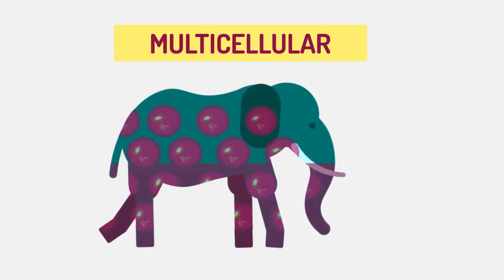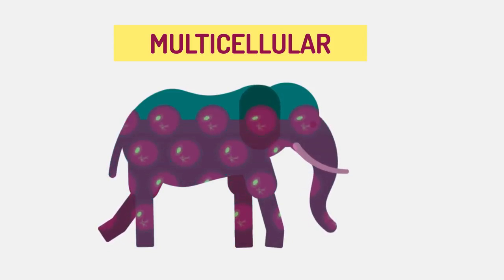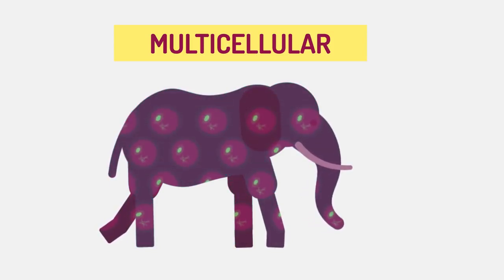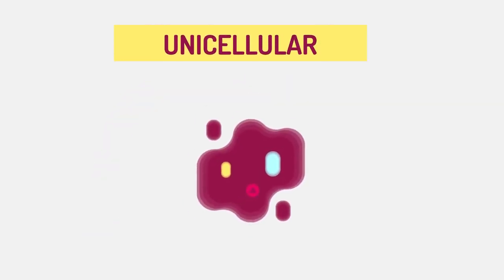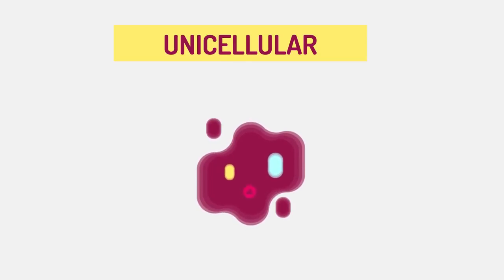Multicellular organisms have long lifespans because individual cells have a relatively small workload, whereas the hard-working single cell of a unicellular organism has such a heavy workload that it can only maintain a very short lifespan.